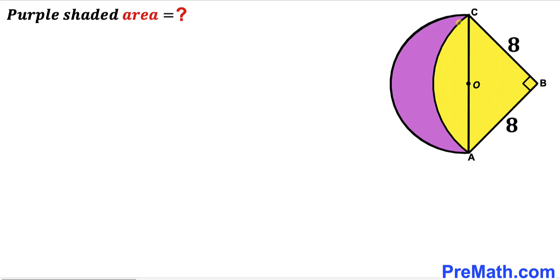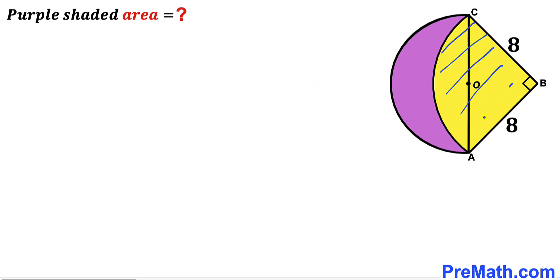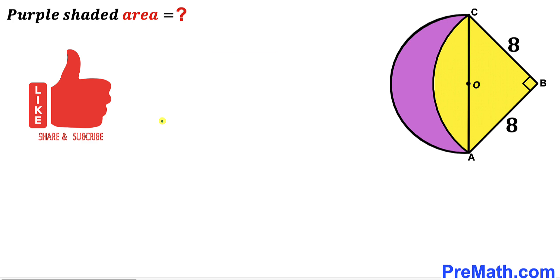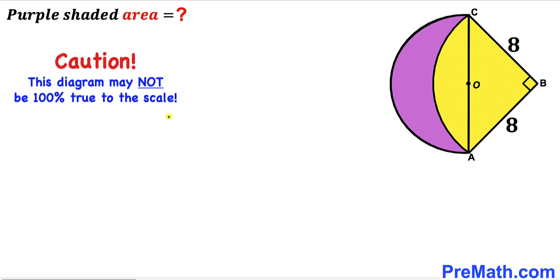Welcome to pre-math. In this video we have a semi-circle with center O and a yellow quarter circle put together as shown in the diagram, where the radius of the yellow quarter circle is 8 units. Our task is to calculate the area of the purple shaded region. Please don't forget to give a thumbs up and subscribe, and keep in mind that this figure may not be 100% true to scale.